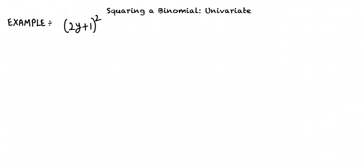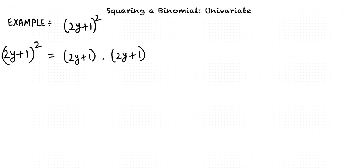We are required to square 2y plus 1. 2y plus 1 whole square can be written as 2y plus 1 times 2y plus 1. We first multiply 2y by 2y and then multiply 2y by 1 and incorporate signs, giving us 4y squared plus 2y.